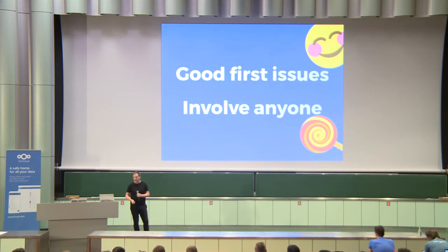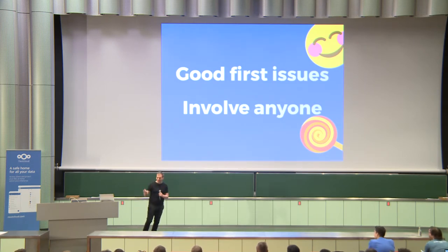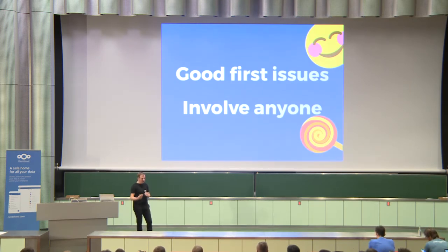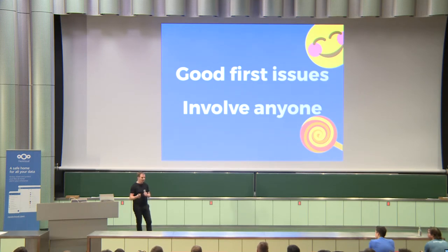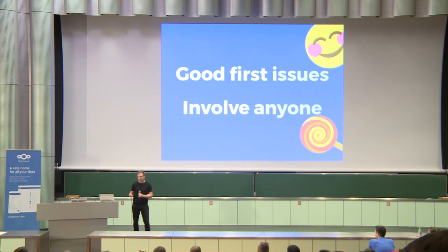It might be a typo or a small pixel issue. Then somebody else can pick it up. The other thing is involving everyone — anyone who opens an issue, anyone who rants about it on Twitter, or anyone who leaves a comment or rating in the app store. Anyone who is excited enough to leave a comment on any platform is excited enough to help you. Everyone can review a pull request. A lot of people don't know they can because it sounds very technical, but if you ask them and show them how, they can do it.